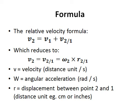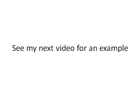If we take point 1 as a point of zero velocity, the equation reduces to v2 equals v2/1. And using a basic formula, v2 equals v2/1 equals omega 2 cross r2/1.